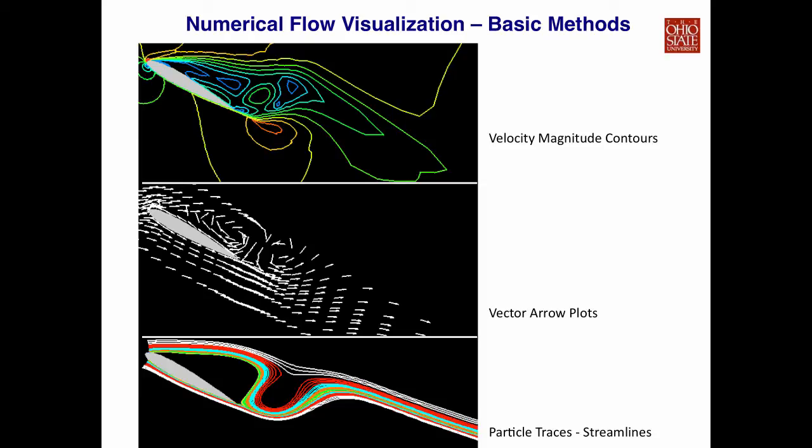And in this example, you can pay attention to the bottom image. Instead of only showing the isocontour of velocity magnitude or the arrow plots, we can also trace particles. Based on the vector field generated by the simulation, you can release small particles, and we follow the vector direction and move the particle. This will create results similar to what you see in our earlier experimental visualization examples, where you use smoke or oil to show the flow patterns.